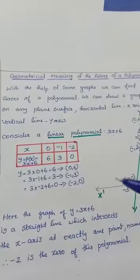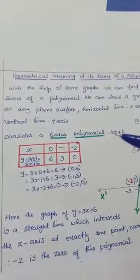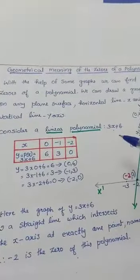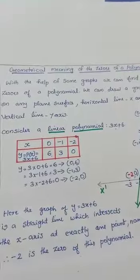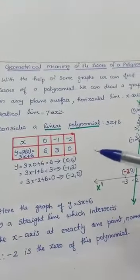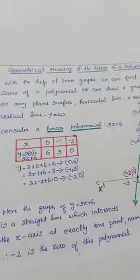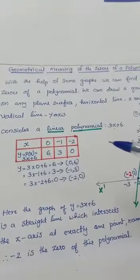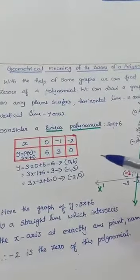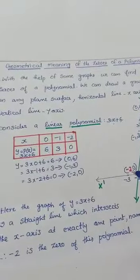Suppose we have to draw a graph of any linear polynomial, say 3x plus 6. We know the value of the polynomial depends on its variable. When we put a value for x, we get a value for 3x plus 6. Let's call it p of x.